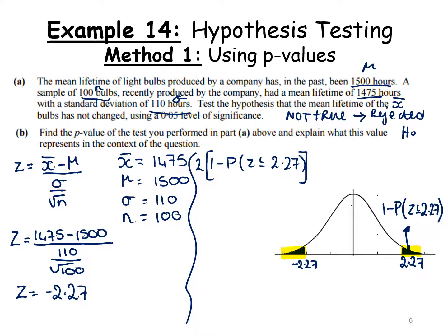Going to my tables and looking up 2.27, I get 2 times 1 minus 0.9884, which gives me 2 times 0.0116, which equals 0.0232, which is 2.32%.